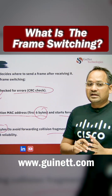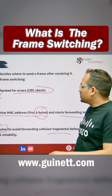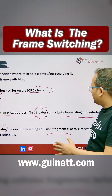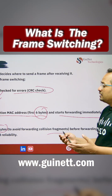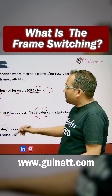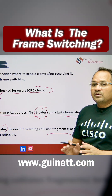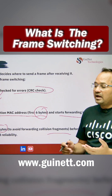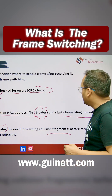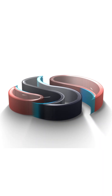Generally, you are going to use the Cut Through process where it checks destination information and starts forwarding without CRC, or you might use the Store and Forward process, which is the default feature of devices when you purchase them. These are the processes you can use to do frame switching in your switching concept.